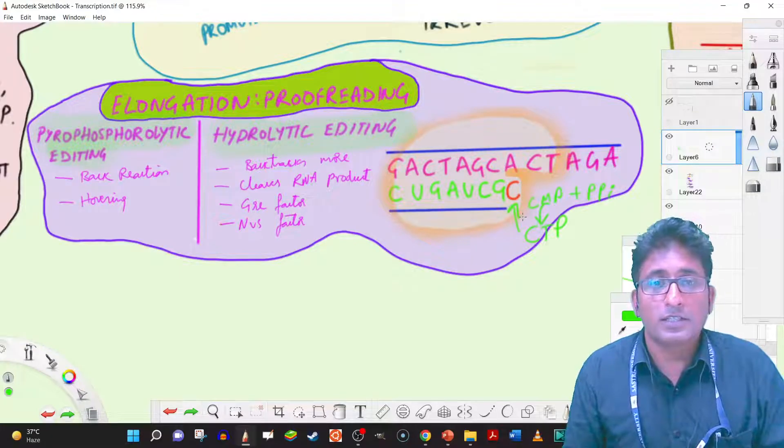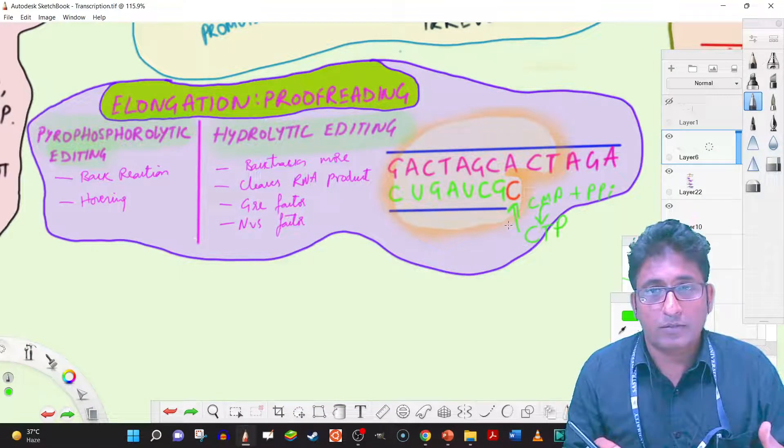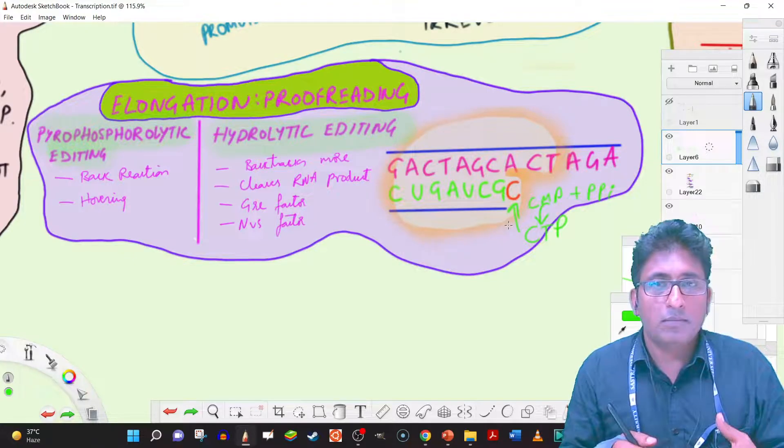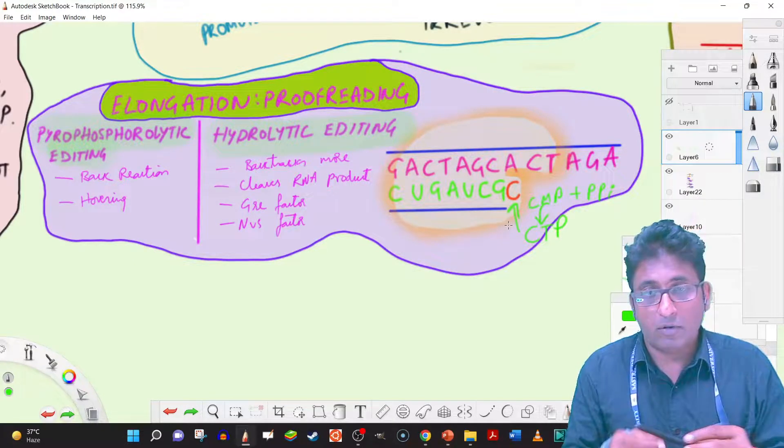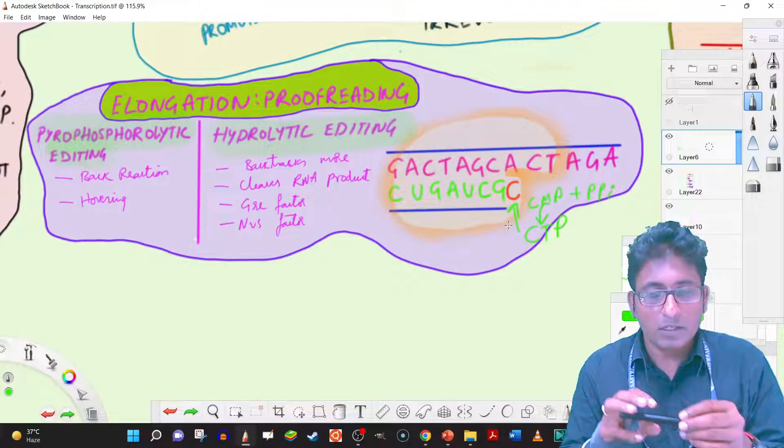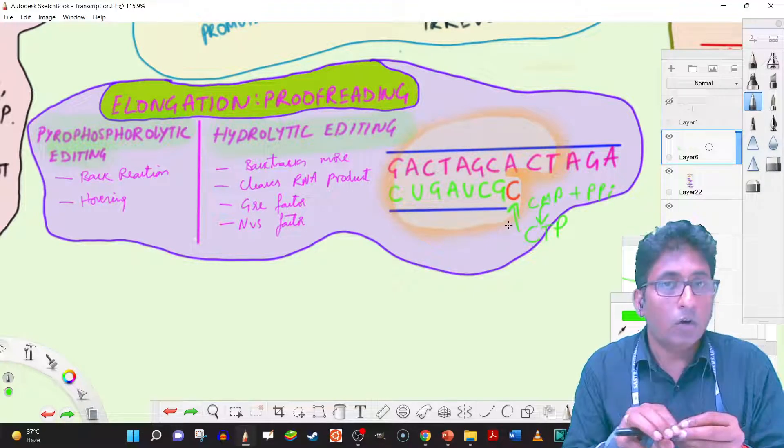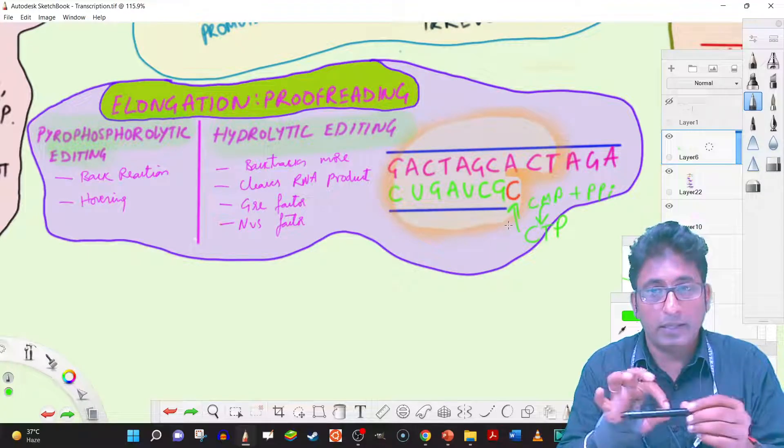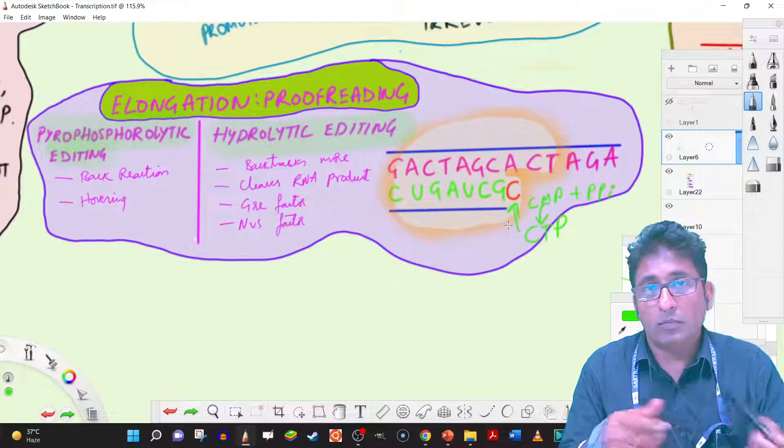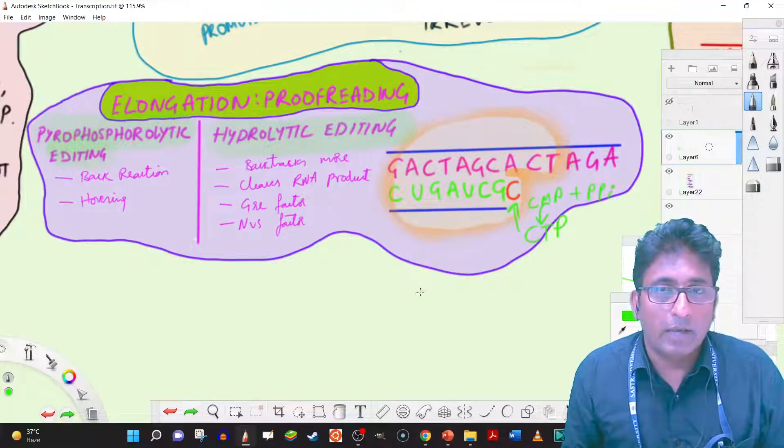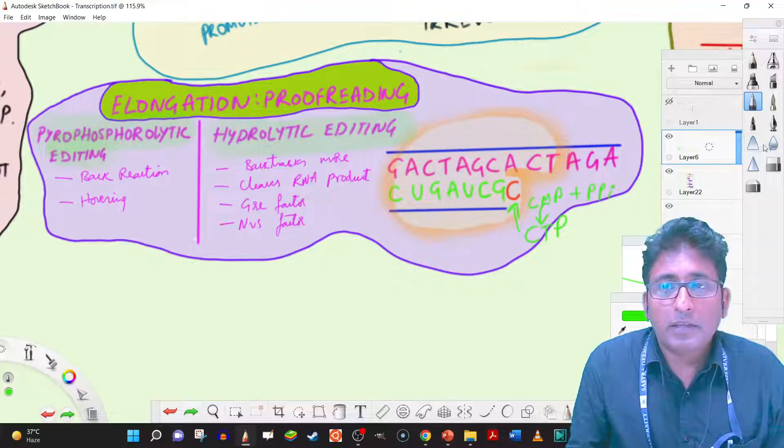It is just a back reaction. So the point is anytime a mismatch or a wrong base has been added, the polymerization rate reduces and it kind of hovers on the template. And then that is when the pyrophosphorylytic action could happen.